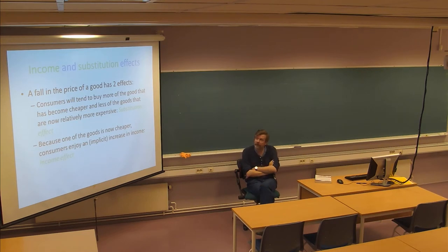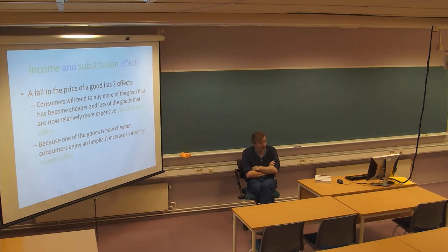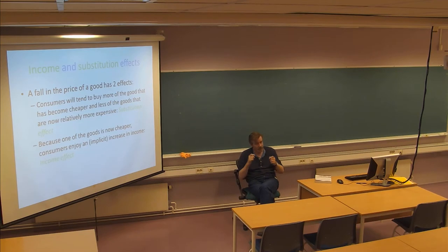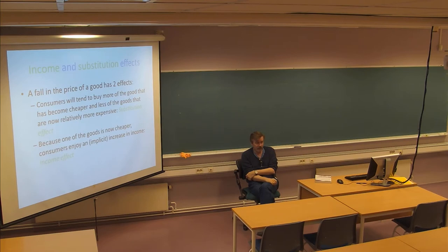A fall in the price of a good has two effects. The first is that consumers tend to buy more of the good that has become cheaper and less of goods that are now relatively more expensive. If the price of a coffee product goes down, you buy more of that coffee and less of other coffee products — this is the substitution effect, meaning you substitute more of one product for less of another.